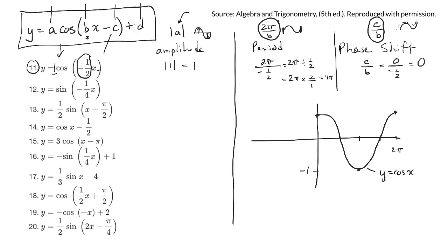the amplitude still stays 1. So the distance up is still going to be 1. The period is different, though. The period is 4π.